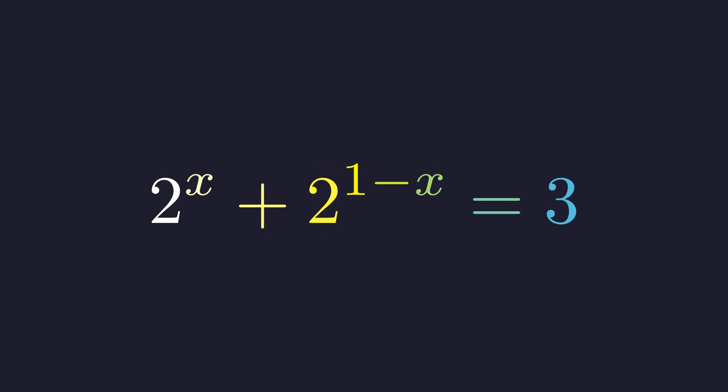Can you solve this in under 30 seconds? Most people can't see the hidden pattern. The variable x appears in two different exponents, but there's a clever trick that transforms this into something much simpler. Let's find it.